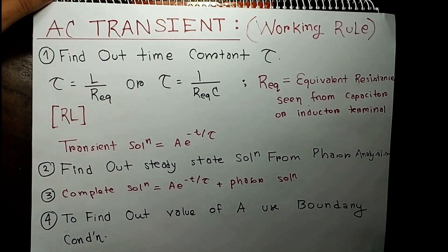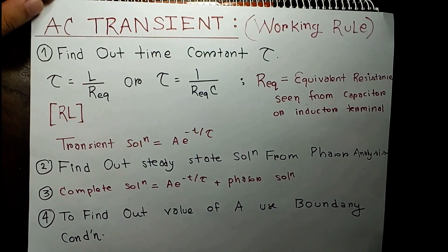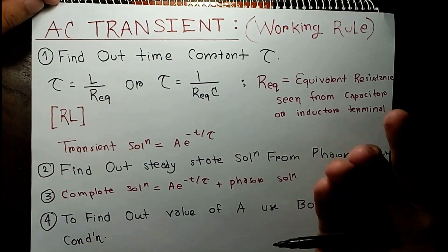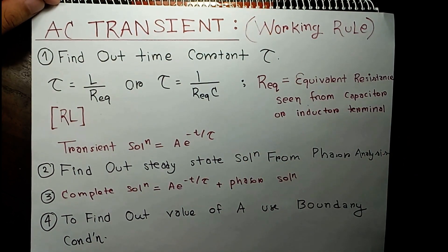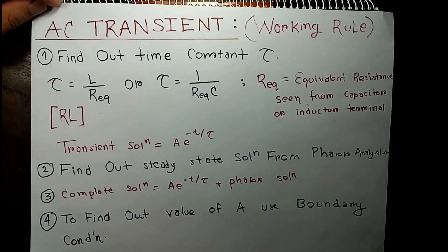So today we will talk about AC transients. Basically a transient means an RL circuit or an RC circuit supplied by an AC voltage source. I will give you the working rules. The first approach you have to do...